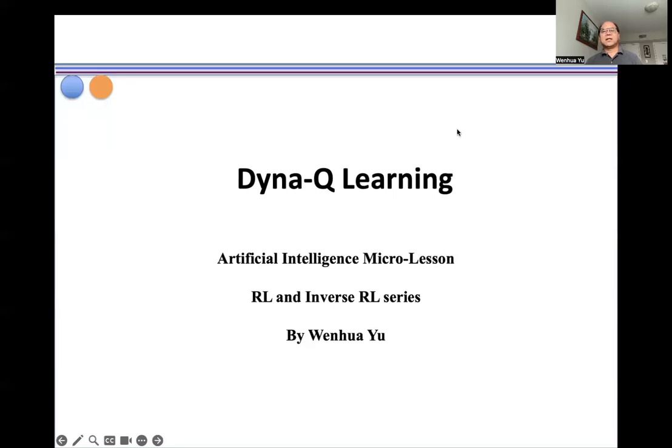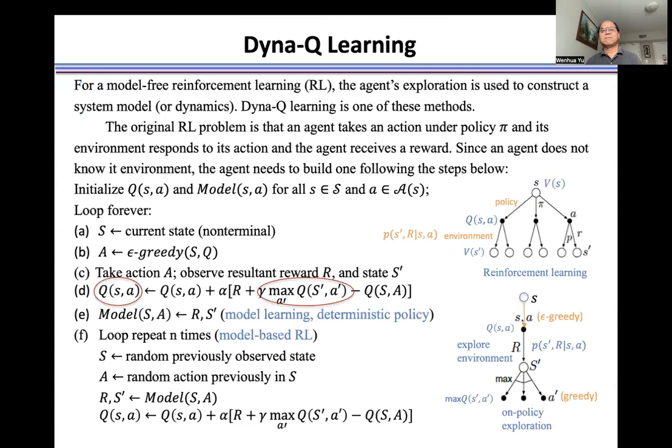Now introduce Dyna-Q learning, a model-free reinforcement learning method, because the environment is unknown. So for action selected by an agent, an agent doesn't know how to move from state s to next state s prime.